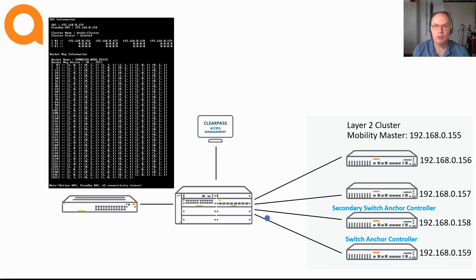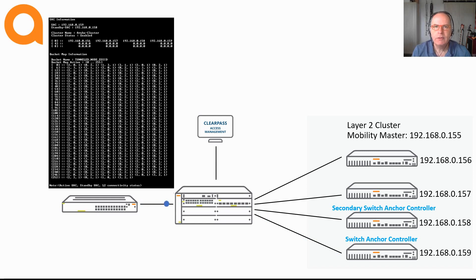When the switch anchor controller fails, there is a stateful failover to the secondary switch anchor controller. This is stateful, meaning the client does not have to re-authenticate — the failover is transparent for the client. When one of the control planes fails, another controller in the cluster will assume the role of either switch anchor controller or secondary switch anchor controller. Once the control plane and backup control plane are established, devices can connect to the network and establish tunnels to the mobility controllers in the cluster.